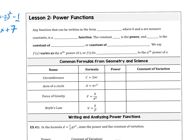Any function that can be written in the form y equals some number times x to some power — this is why it's called a power function, because it's x to some power.